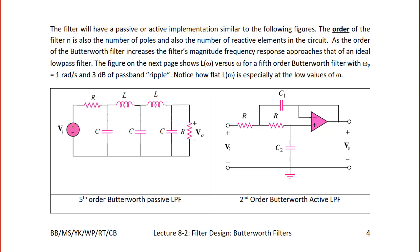The Butterworth filter can have a passive or active implementation. The order of the filter equals the number of poles and also the number of reactive elements (inductors and capacitors) in the circuit. As the order increases, the filter's magnitude frequency response approaches that of an ideal low-pass filter. A fifth-order Butterworth filter with ωp = 1 rad/s and 3 dB pass band ripple has five reactive elements in a passive configuration. At zero frequency, capacitors look like open circuits and inductors look like short circuits, giving a gain of R/2R = 1/2.